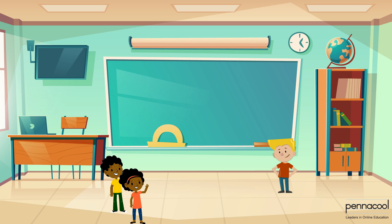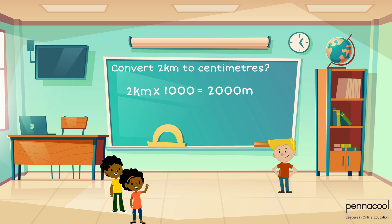Now that we have this knowledge, do you think you can convert 2 kilometers to centimeters? We can convert the kilometers to meters, then take our answer in meters and convert it to centimeters. First, we'll multiply 2 kilometers by 1,000. This gives us 2,000 meters. Then, we can convert the 2,000 meters to centimeters by multiplying by 100. This gives us a measurement of 200,000 centimeters.